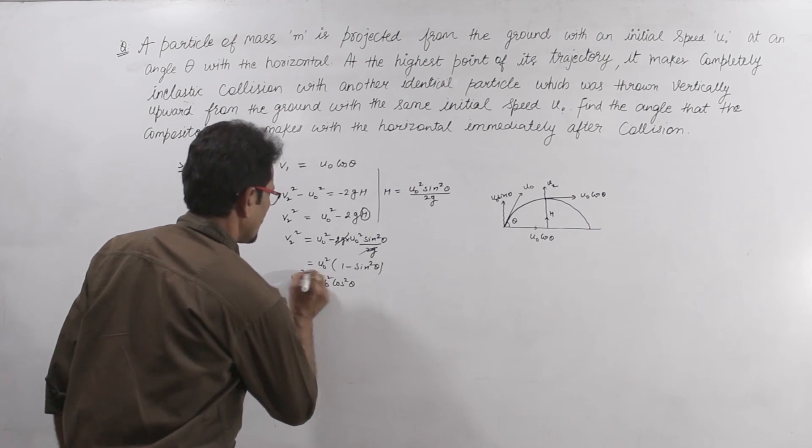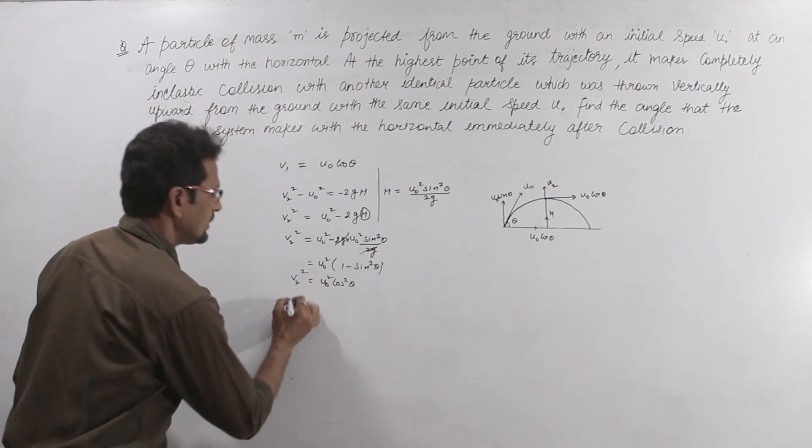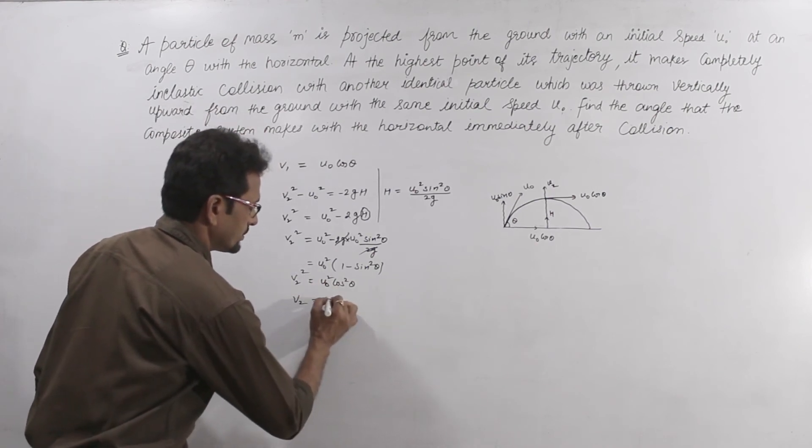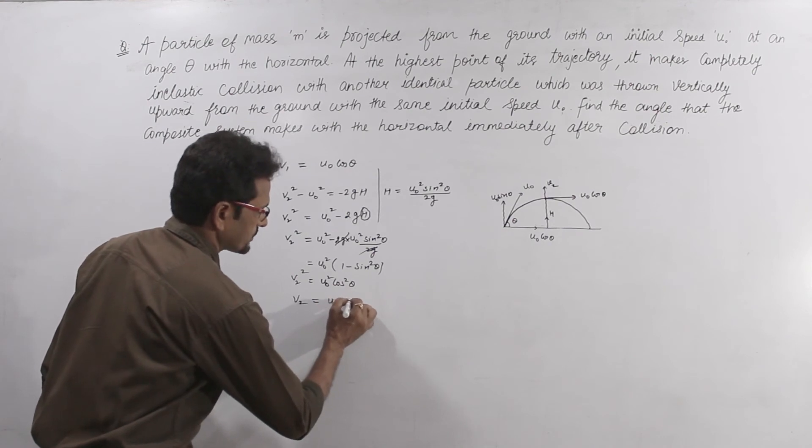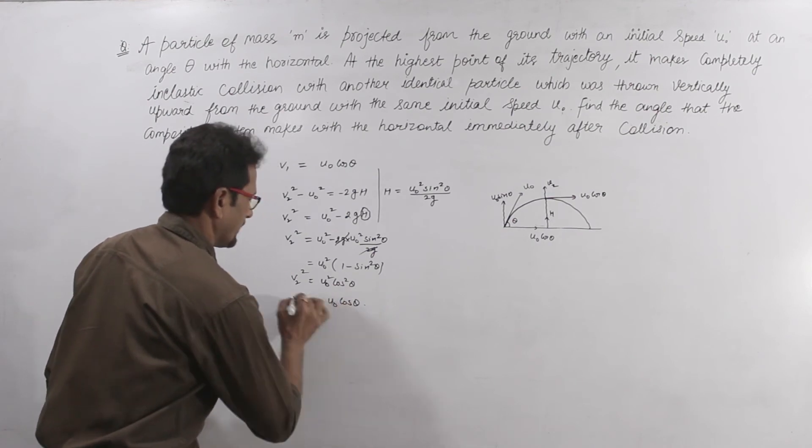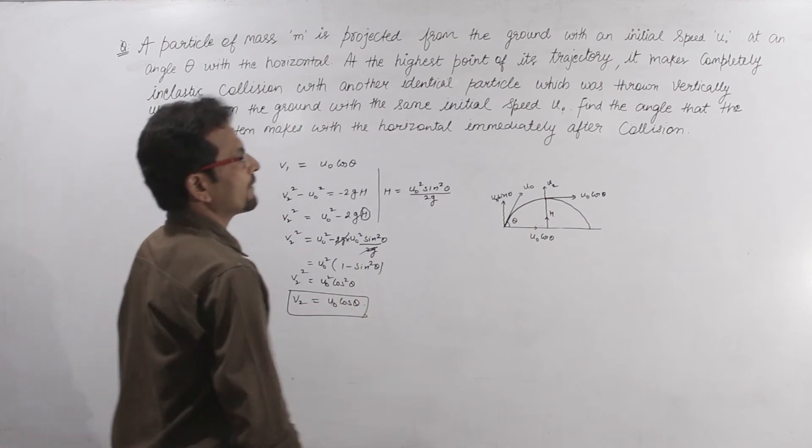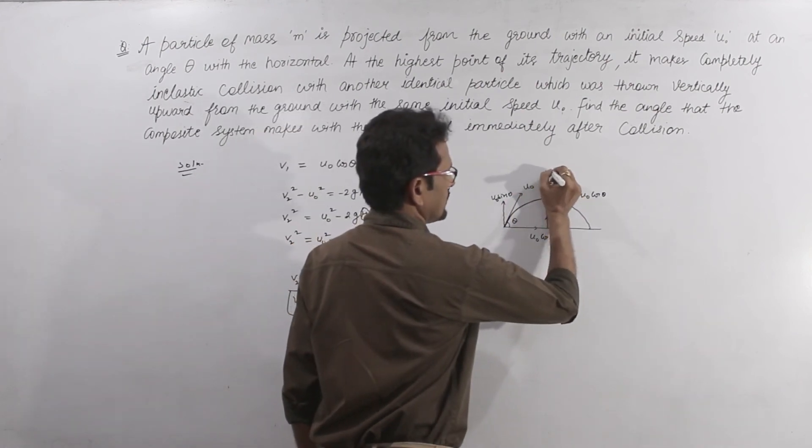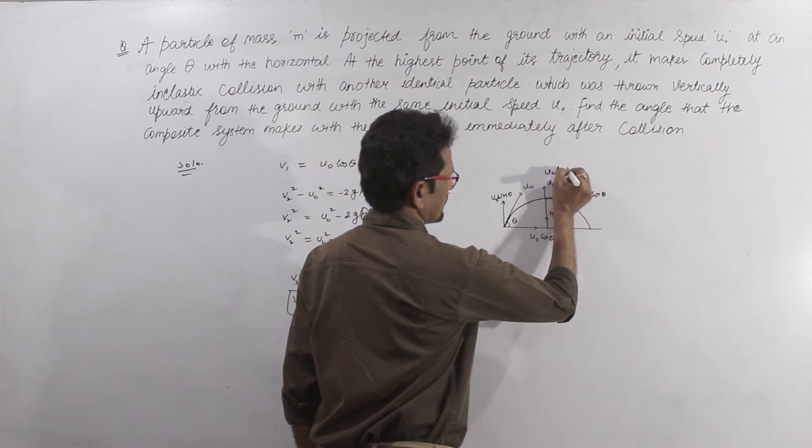So v2 squared equals u0 squared cos squared theta. Therefore v2 equals u0 cos theta. The value of v2 also comes out to be the same, u0 cos theta.